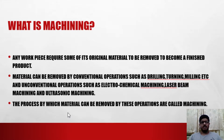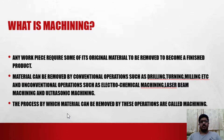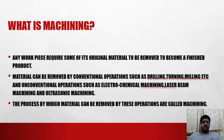So, what is machining? For example, take an A4 sheet of paper and you want a round piece of paper. What do you do? You either cut it with a scissor or a blade. The same can be applied to a metal also. Any workpiece requires some of its original material to be removed to become a finished product. The A4 sheet is a workpiece and the round piece of paper is the finished product.